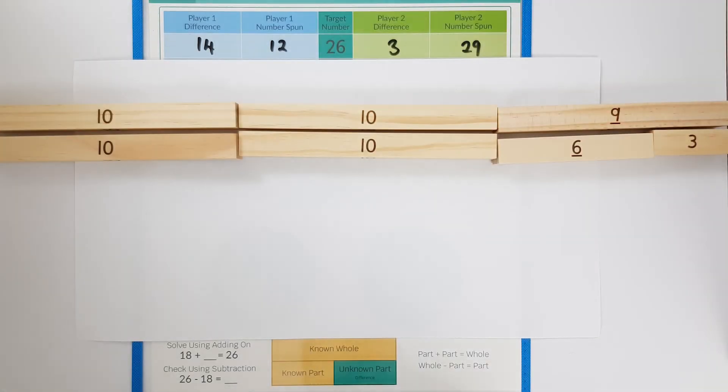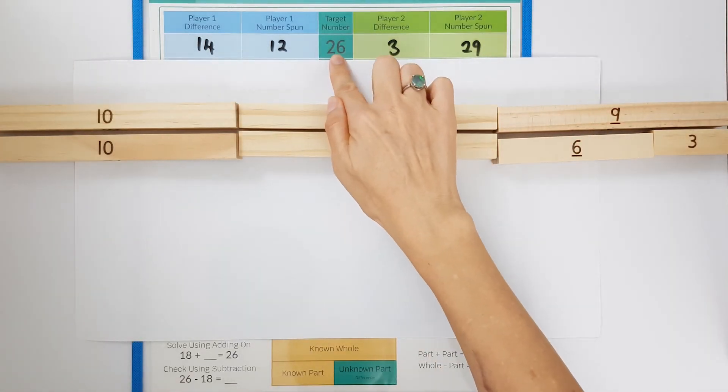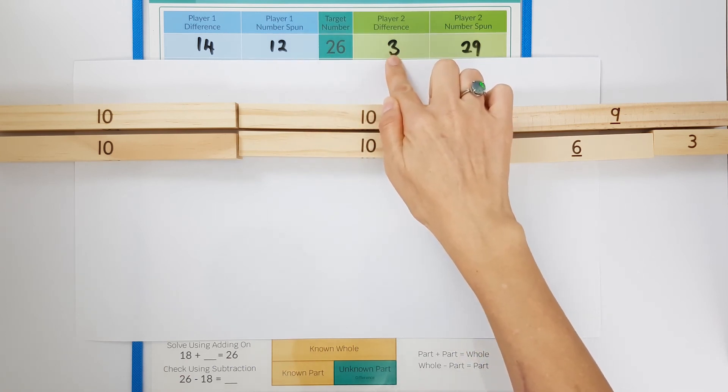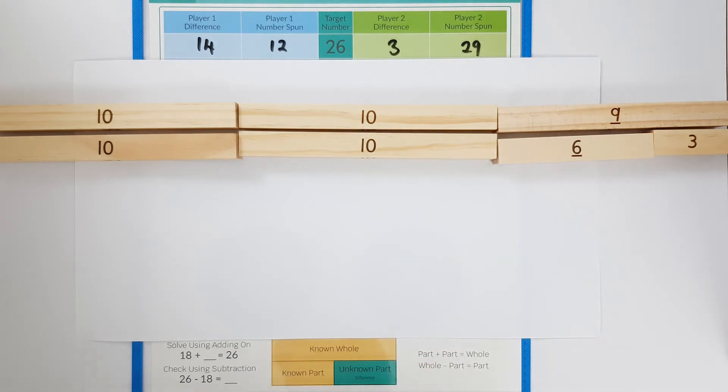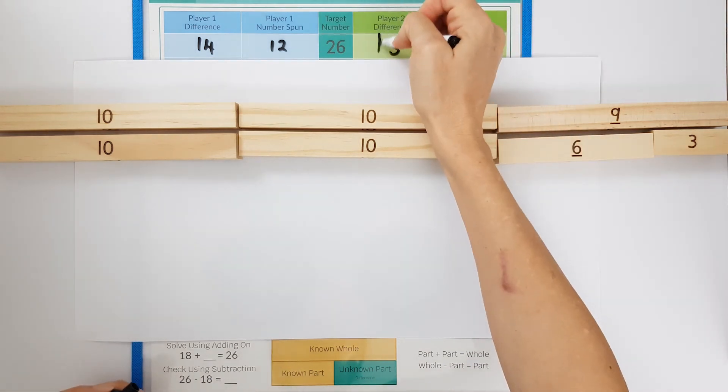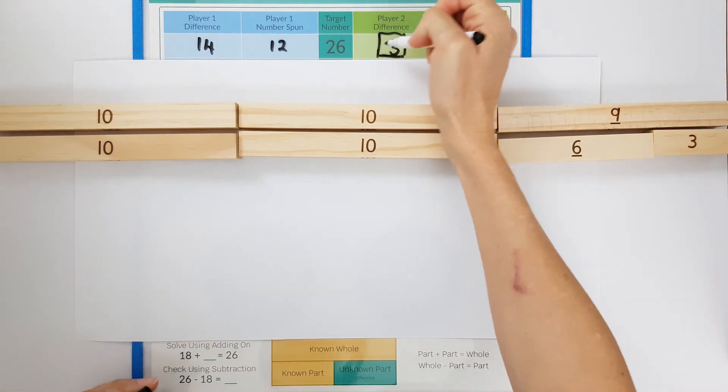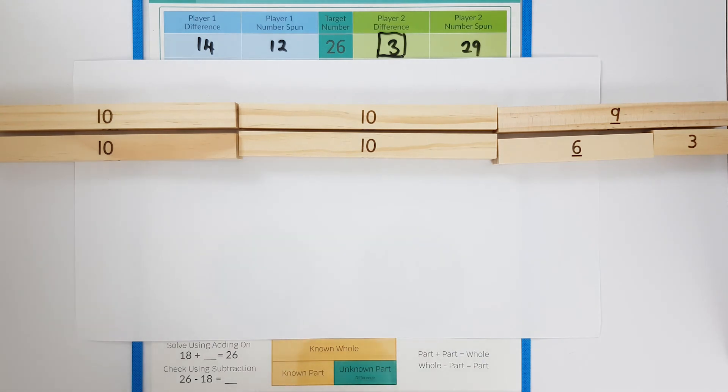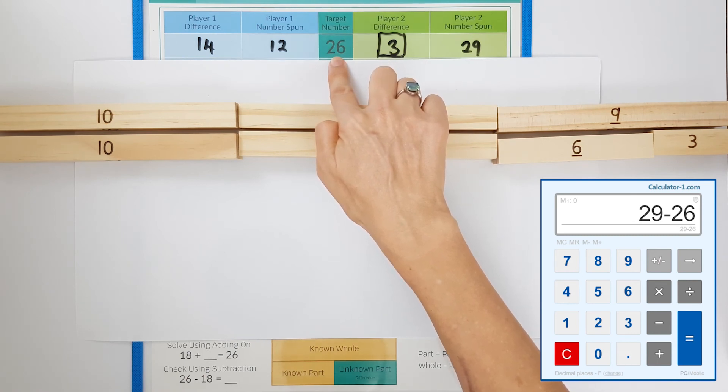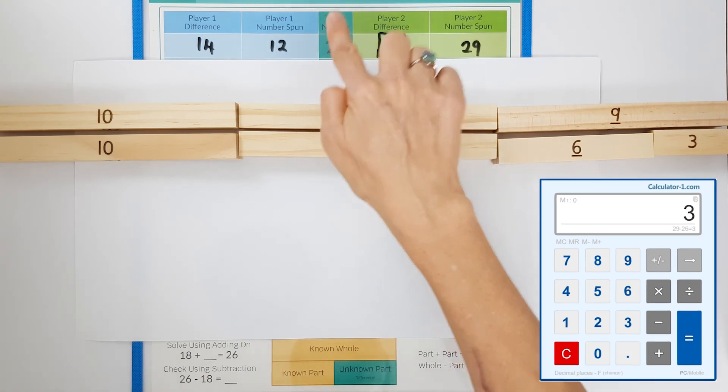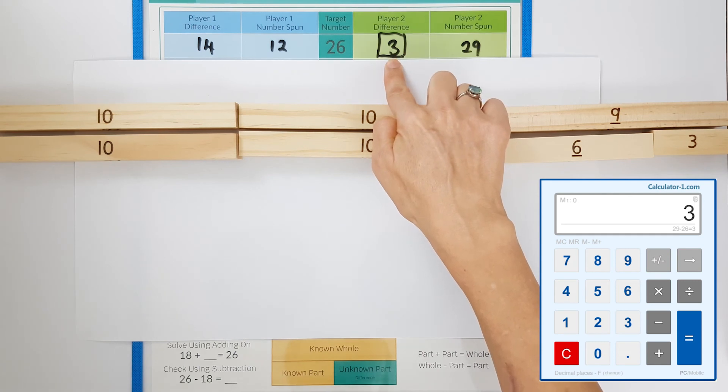Player two would say twenty six add three equals twenty nine. Their partner needs to enter in the calculator a subtraction to get the difference as the answer. To enter this in the calculator they would start with the larger set and say the whole of twenty nine subtract the part of twenty six and when they push equals they will get the difference of three.